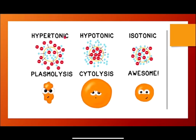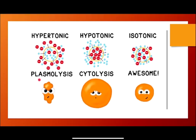Looking at the diagram, you can see the different solutions and how the cell changes. The red color molecules are NaCl — common salt — and the blue color molecules are water. In the hypertonic case, all the common salt molecules come out of the cell, the water leaves, and the cell shrinks. That particular process is called plasmolysis.